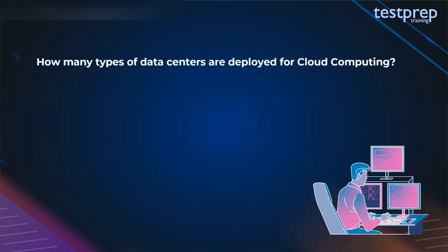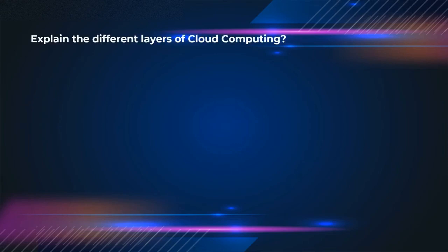Question 34: How many types of data centers are deployed for cloud computing? There are two different data centers: first, containerized data centers; second, low density data centers. Question 35: Explain the different layers of cloud computing. The different layers are: first, Software as a Service — provides users direct access to the cloud application without installing anything on the system.